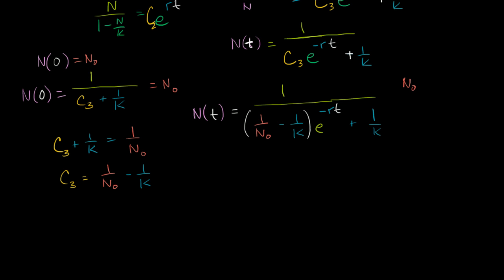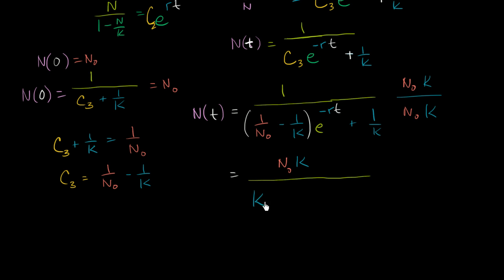Multiplying numerator by n₀k gives n₀k in the numerator. In the denominator: multiplying (1/n₀)·e^(−rt) by n₀k gives k·e^(−rt), multiplying (−1/k)·e^(−rt) by n₀k gives −n₀·e^(−rt), and multiplying 1/k by n₀k gives n₀. So the denominator is k − n₀·e^(−rt) + n₀, which simplifies to k·e^(−rt) − n₀·e^(−rt) + n₀.